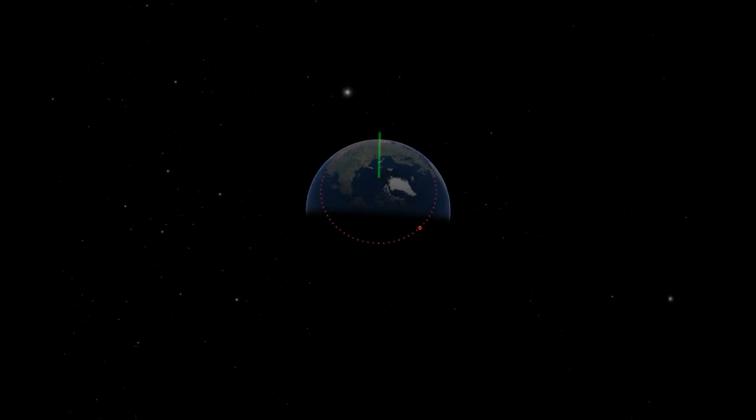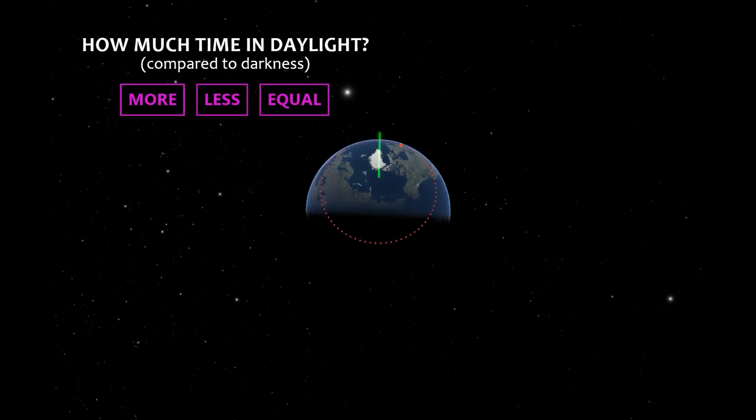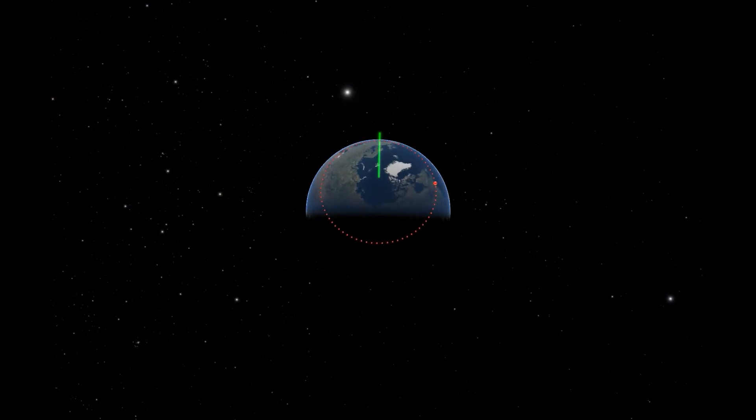Let's change Earth's state. This time, looking at this Earth, will Boston spend more time in daylight, less time, or will the time be equal? That's right! It looks like Boston will spend nearly two-thirds of its day in sunlight on this date. So what season do you think it is in Boston, then?